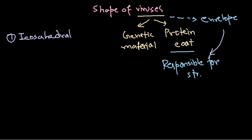Let me draw the icosahedral structure for you. It is an extended, joined geometric shape — this is how an icosahedral usually looks. So this is the icosahedral symmetry and structure. The other major type of virus shape is helical.